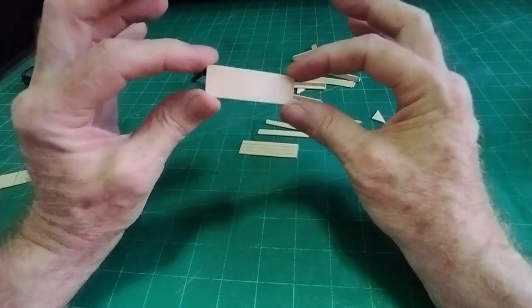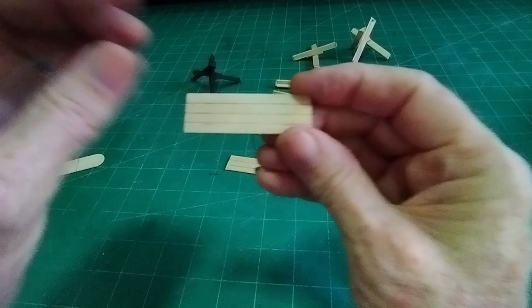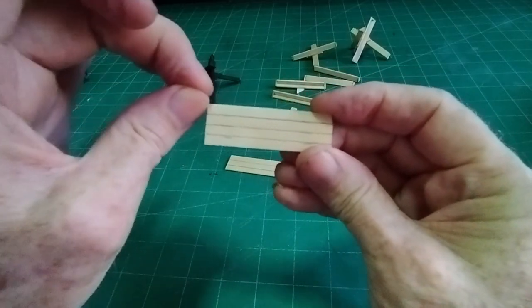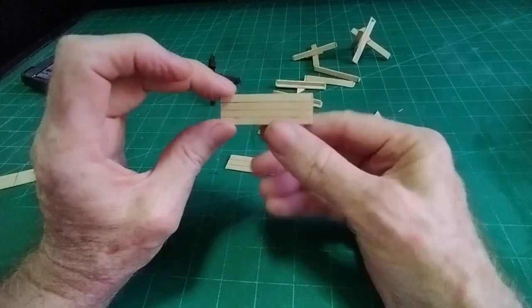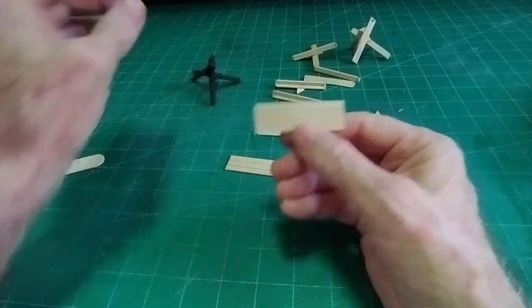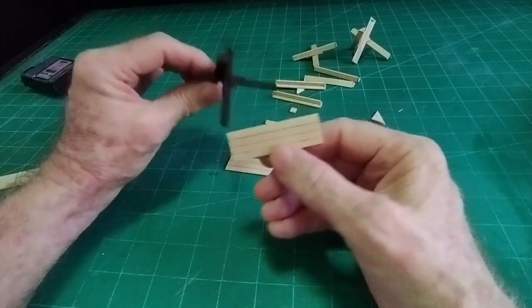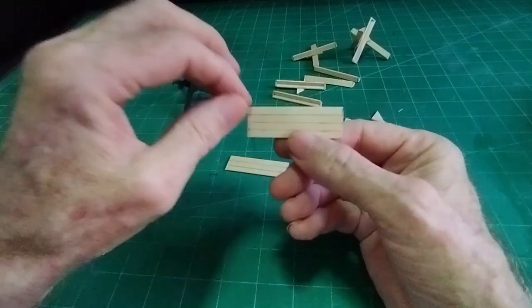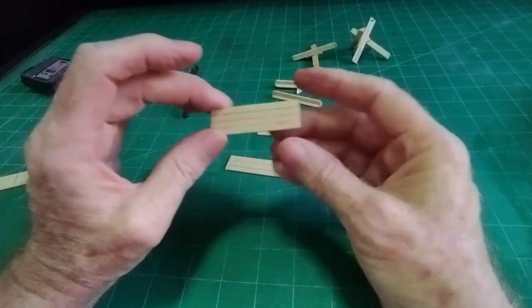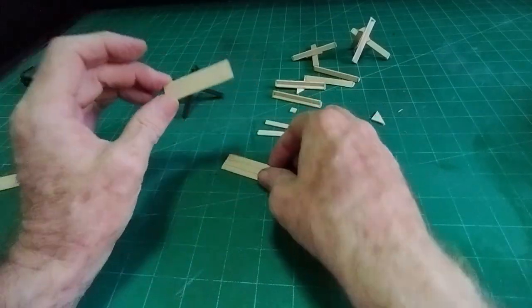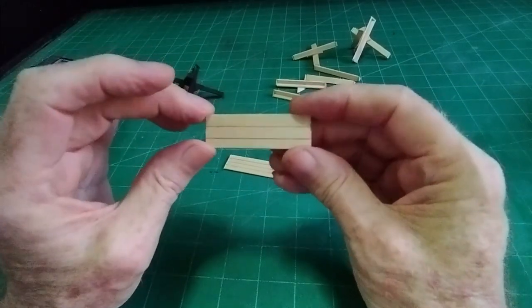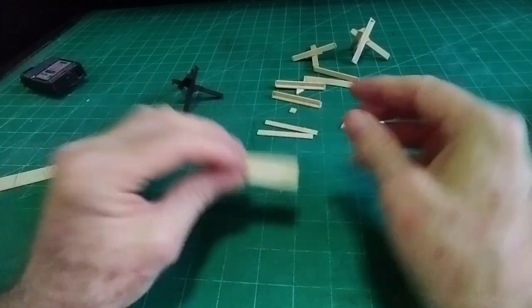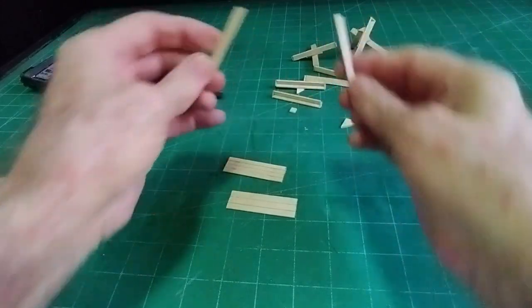Then you need to mark off 3/16 of an inch and cut. You'll need three pieces for each tank stop, so depending on how many you're going to make - I'm going to make three, so I need nine pieces 3/16 wide and also nine pieces a quarter of an inch wide, six millimeters.